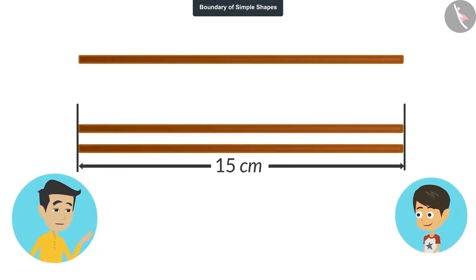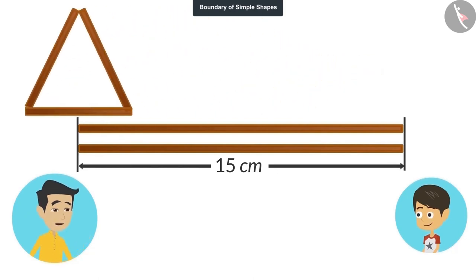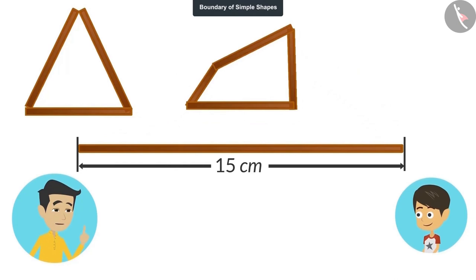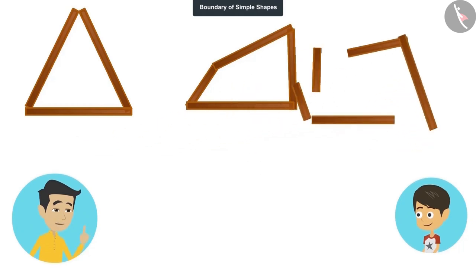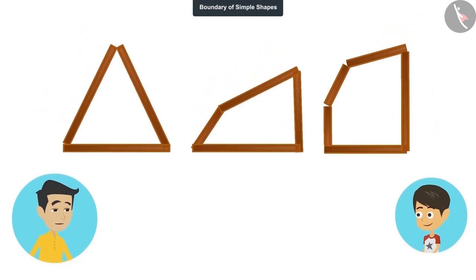Now I cut one of these sticks into three parts and make a shape from it. In the same way, I cut the other stick into four parts and make a shape from it. And finally, I cut the third stick into five parts and again make a shape from it. Now there are three such figures in front of you that are made from sticks of equal lengths. Can you tell the length of their boundaries?